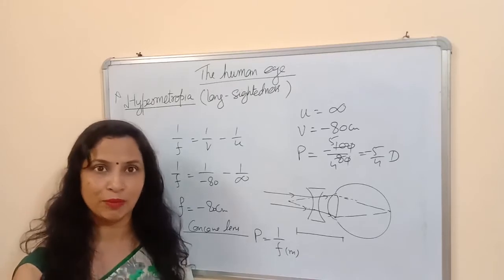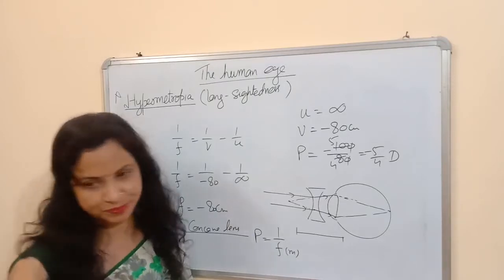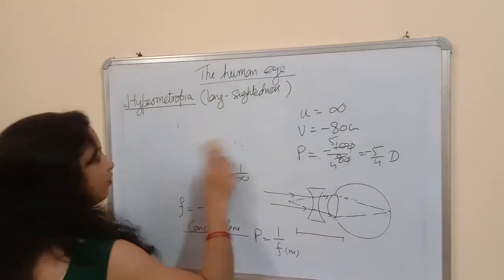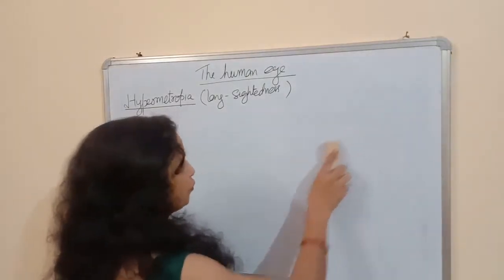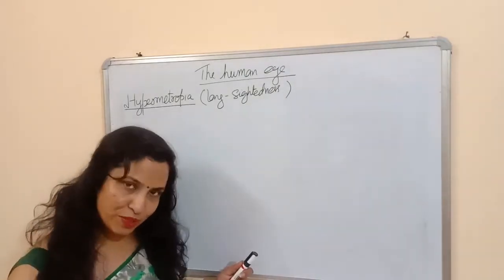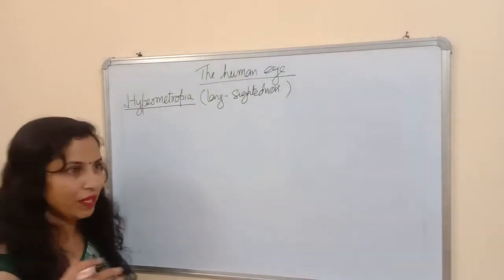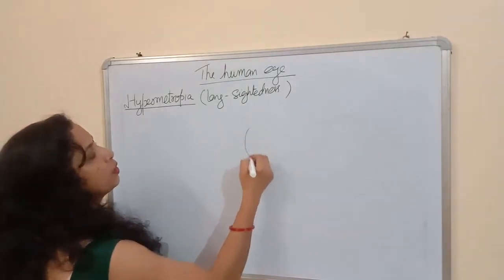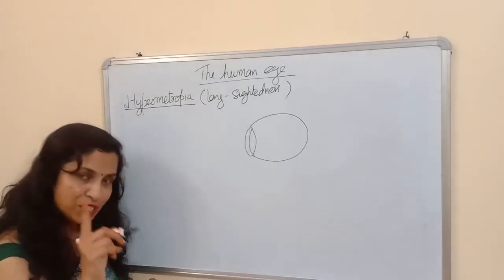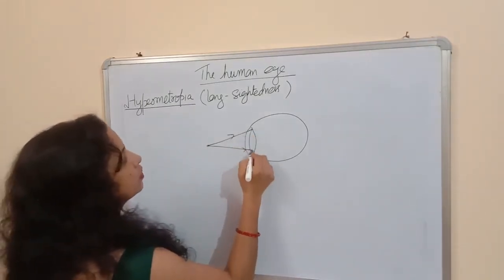In hypermetropia, the person can see far objects clearly but cannot see nearby objects. There are two causes for hypermetropia. In myopia, the image is formed before the retina. But in case of hypermetropia, the image is formed behind the retina.